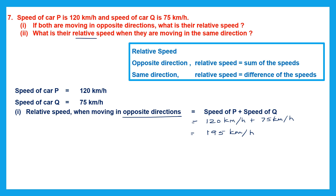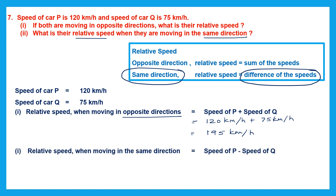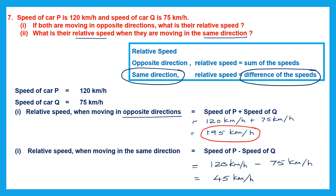Next: what is the relative speed when they are moving in the same direction? Same direction means we find the difference. Relative speed equals speed of P minus speed of Q: 120 kilometers per hour minus 75 kilometers per hour equals 45 kilometers per hour. So when moving in the same direction, the relative speed is 45 kilometers per hour.